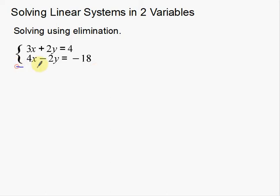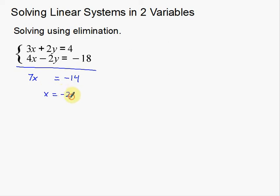When I take these two systems and add them together, I get 7x. Notice 2 minus 2 is going to give me 0, equals negative 14. That's what we mean by elimination — we take these two equations, add them together, and we eliminate a variable. In this case, we eliminated y. So all I have to do is divide both sides by 7, and I get negative 2 for my x. You create an equation with a single variable and solve for it.